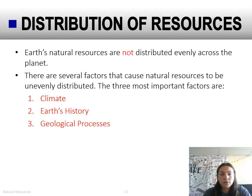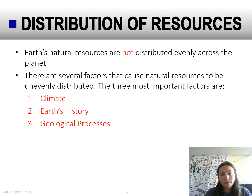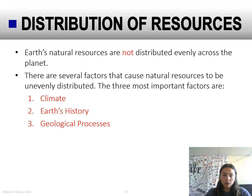The last portion of your guided notes is all about the distribution of natural resources. Earth's natural resources are not distributed evenly across the planet. There are several factors that cause this uneven distribution. The three most important factors are number one: climate, number two: Earth's history, and number three: geological processes.